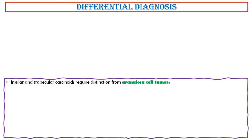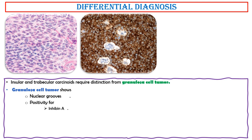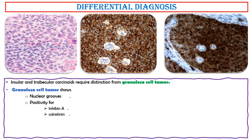Insular and trabecular carcinoids require distinction from granulosa cell tumor. Granulosa cell tumor shows nuclear grooves instead of the fine salt and pepper chromatin distribution of carcinoid tumor. Granulosa cell tumors show positivity for Inhibin A (diffuse cytoplasmic staining) and Calretinin (diffuse cytoplasmic and nuclear staining), and negativity for EMA and neuroendocrine markers.